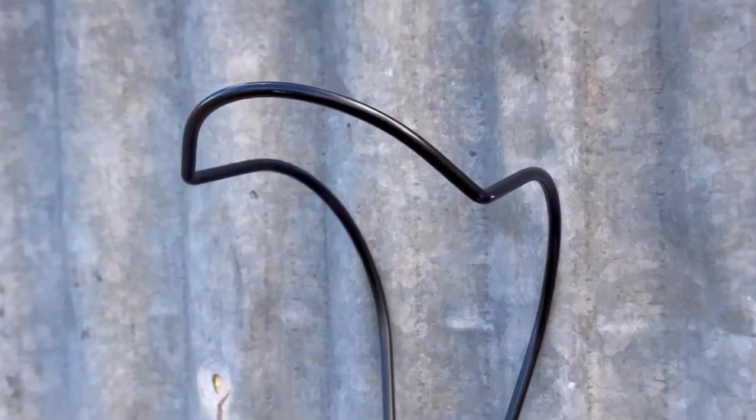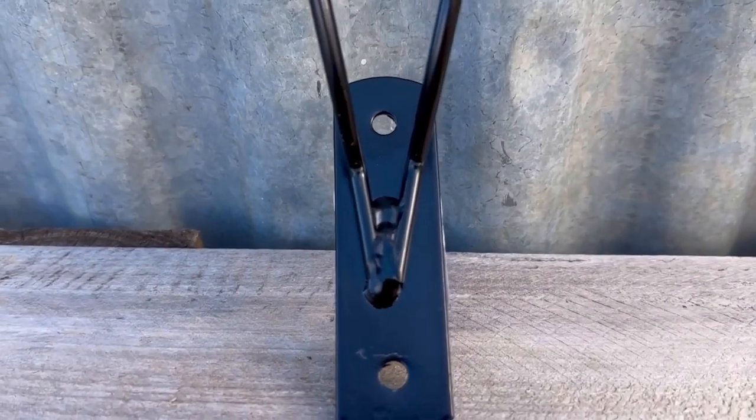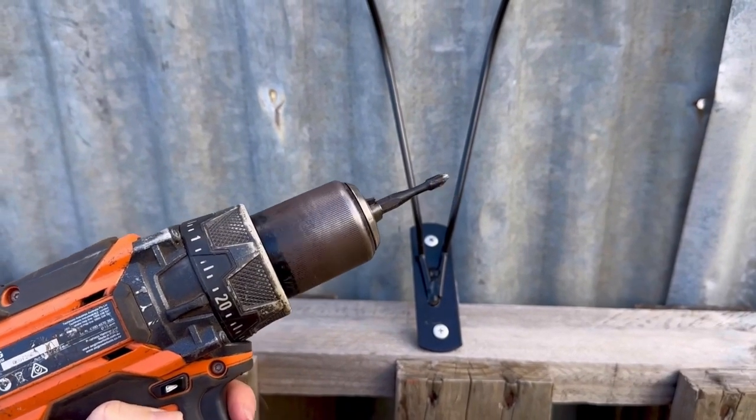The Helmet Hanger has a simple installation process. All you'll need are two screws suited to whatever surface you're attaching the Helmet Hanger to and a drill.